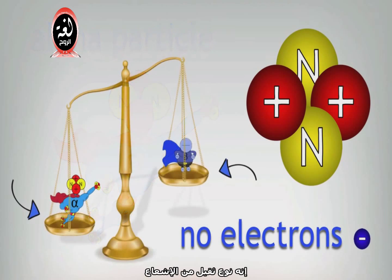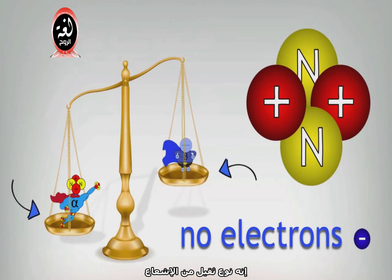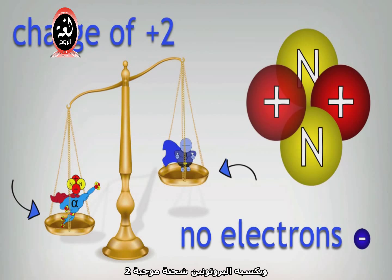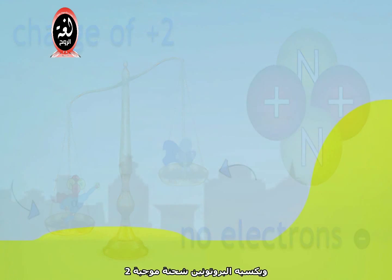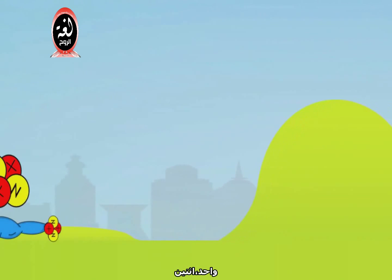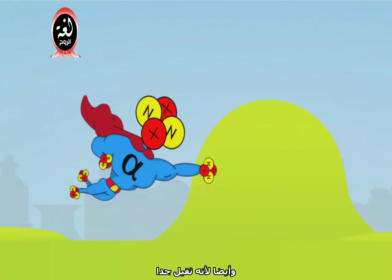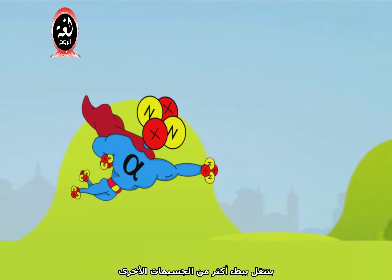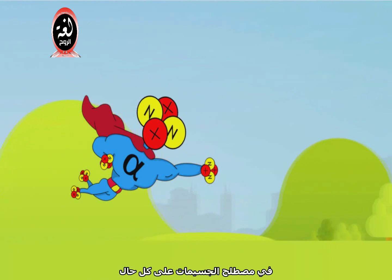An alpha particle is two protons and two neutrons. It's the heaviest type of radiation, and the two protons give it a charge of plus two. Also, because it's very heavy, it travels slower than other particles — well, in particle terms anyway.